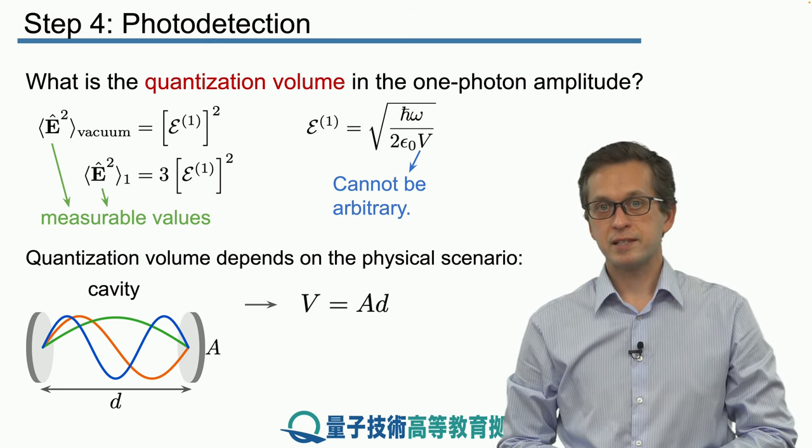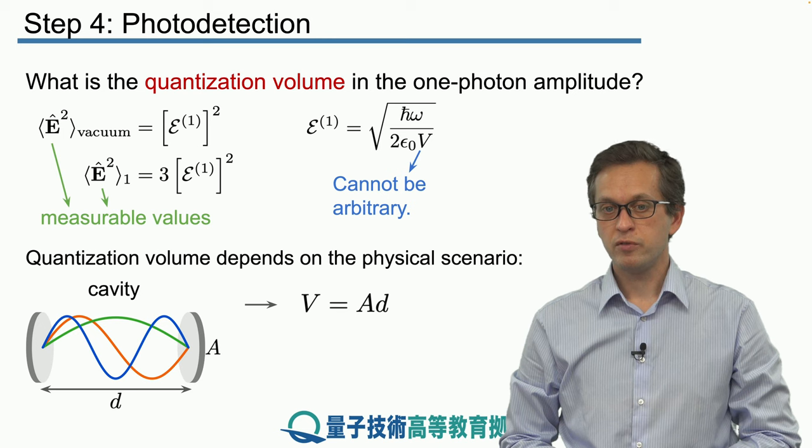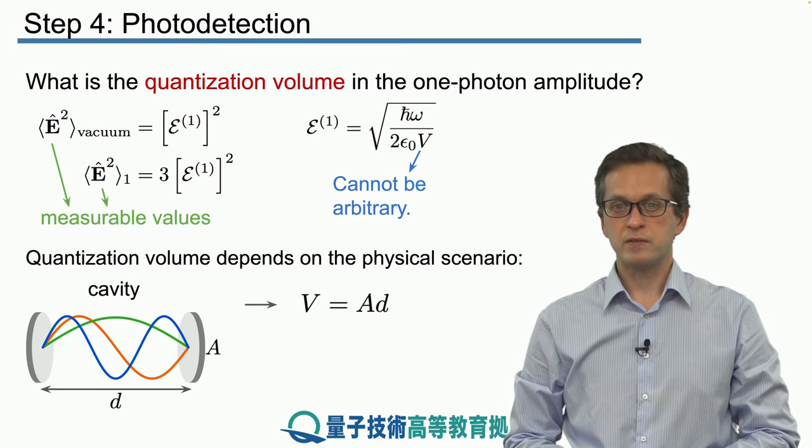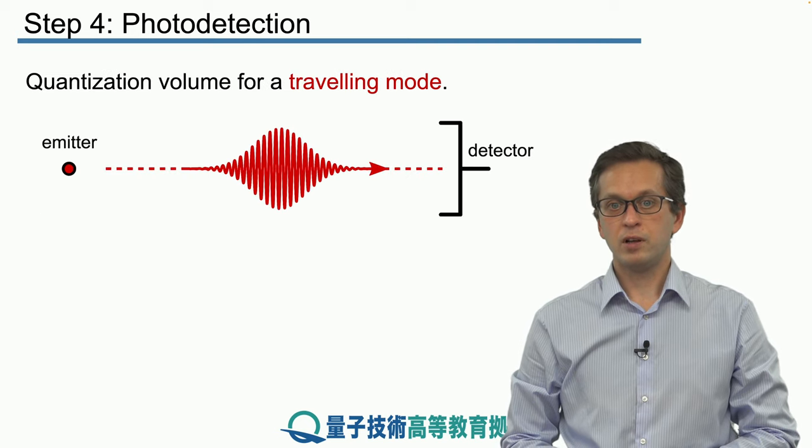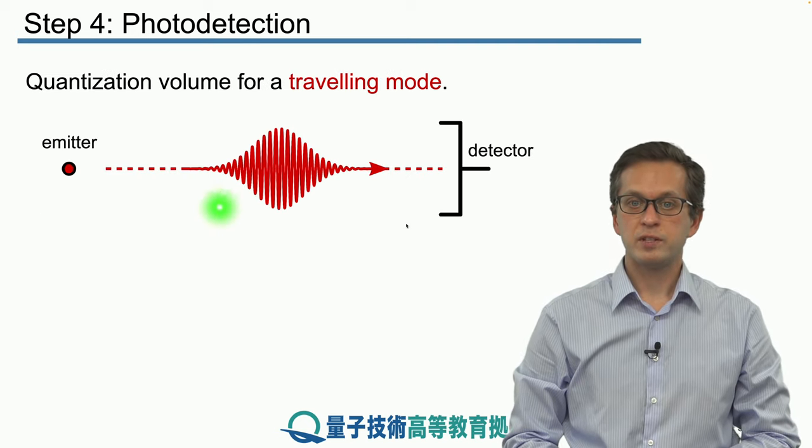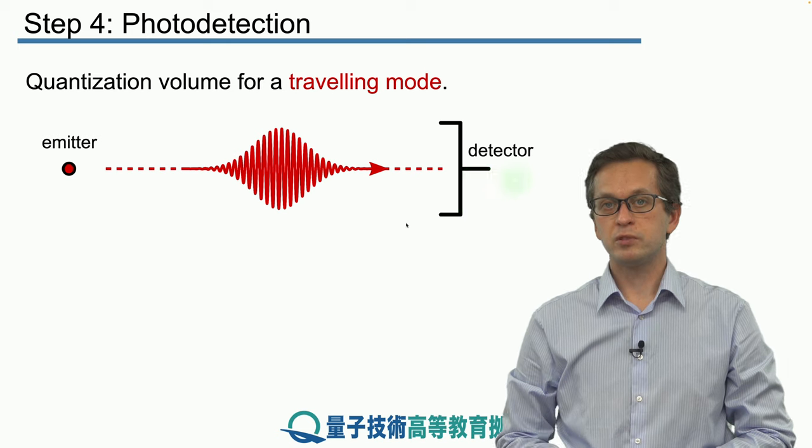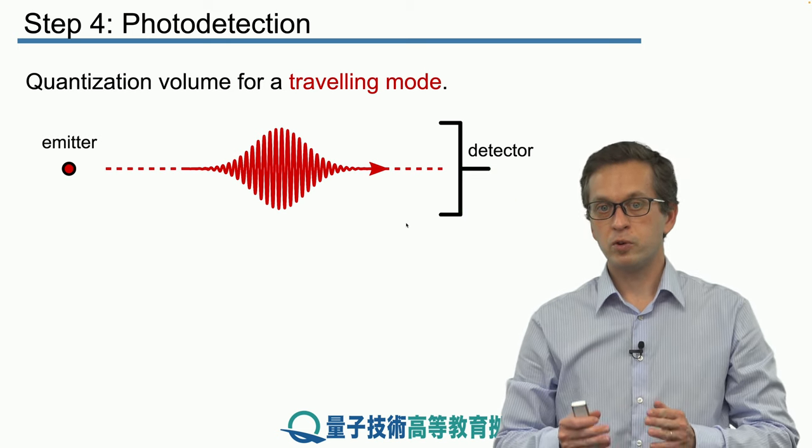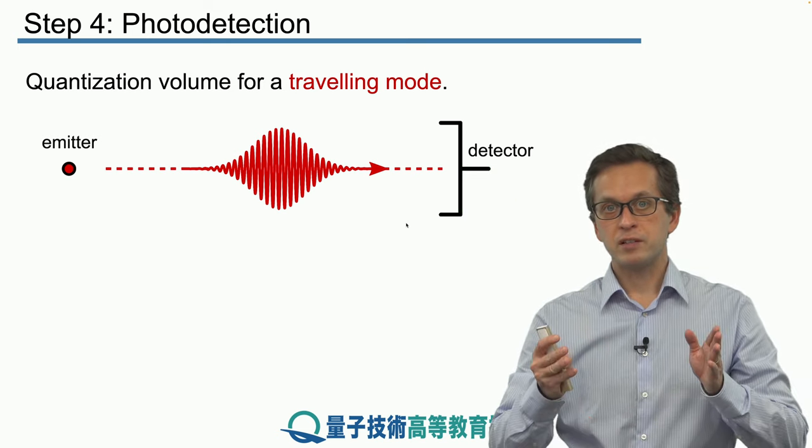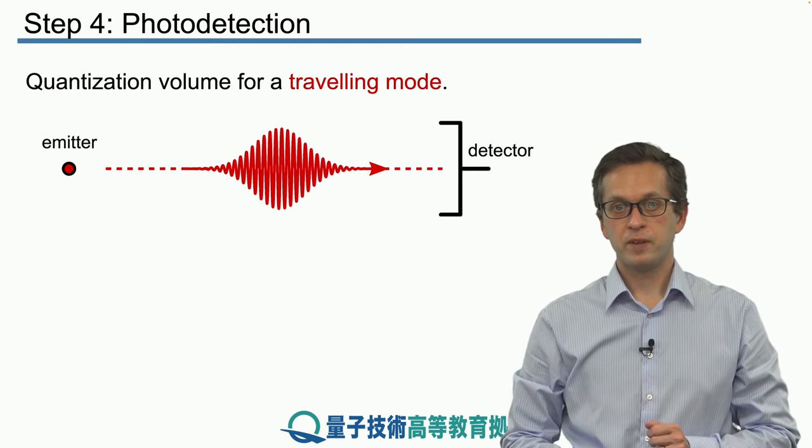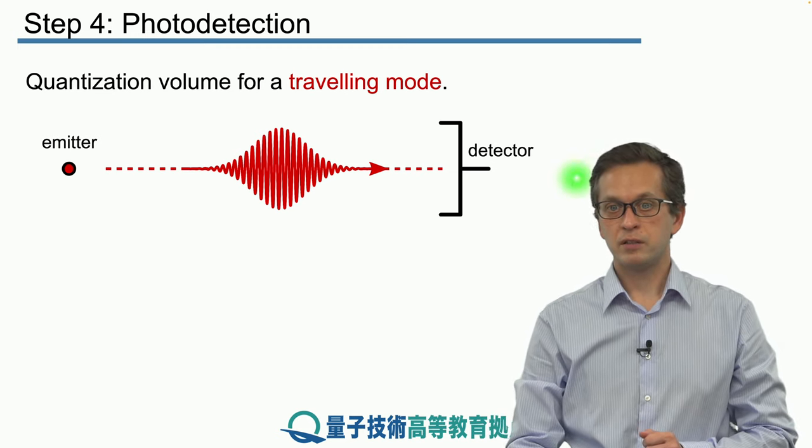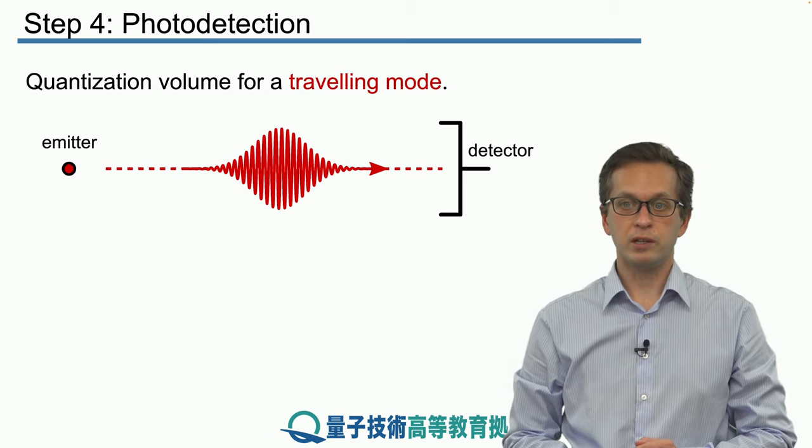But this sets up standing waves. So far we have been talking about traveling waves. So what is the quantization volume for a traveling wave? Well, we go back to what we said about the wave packets of a single photon. The photon is ejected and it travels in a finite length wave packet and then it travels the detector where we get a click or we don't get a click.